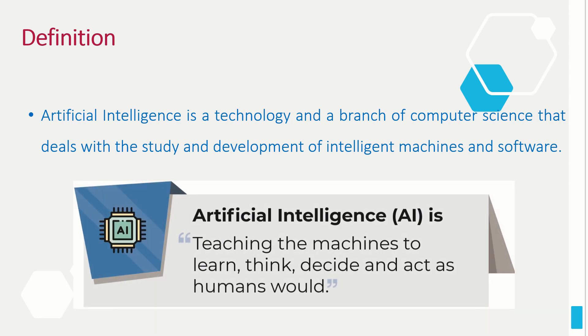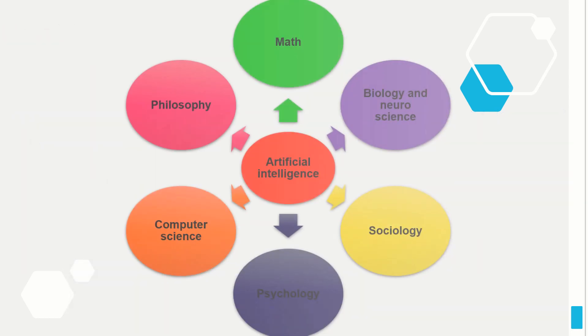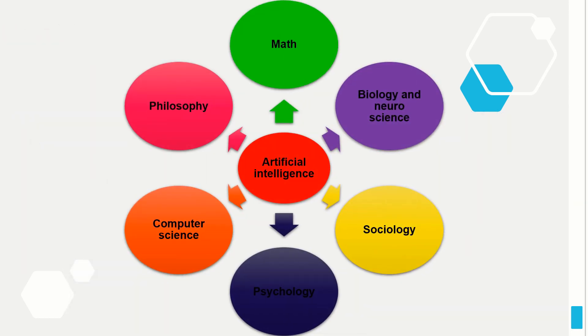In simple words, AI is teaching machines to learn, think, decide, and act as humans would. AI has its footprints in almost all fields — be it math, biology, neuroscience, sociology, psychology, computer science, or philosophy. AI has definitely left its marks across all of these.